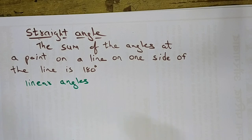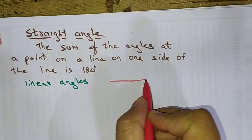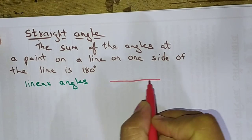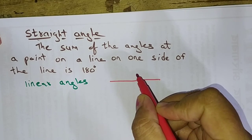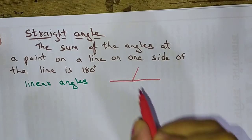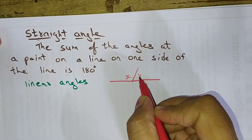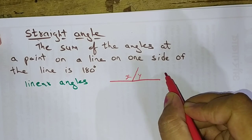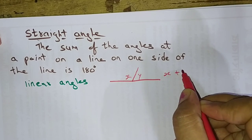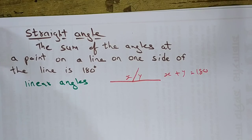Let us see how this works. If this is a straight line and on this straight line two angles are formed — if this is x and this is y — then x plus y should sum up to 180 degrees.